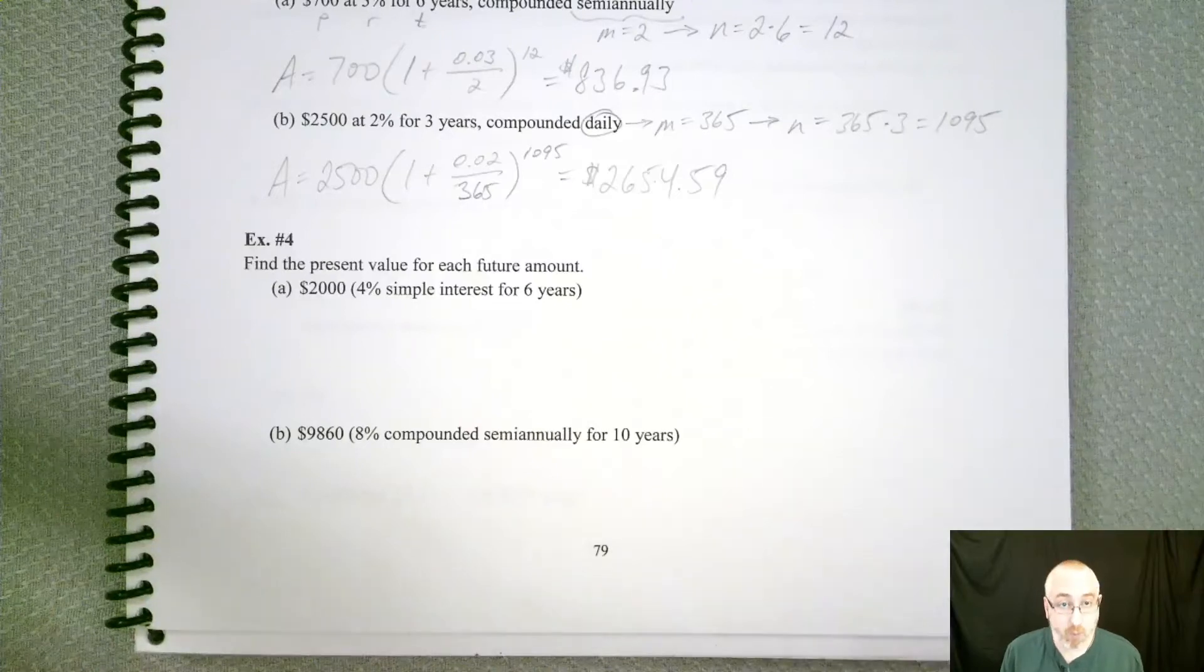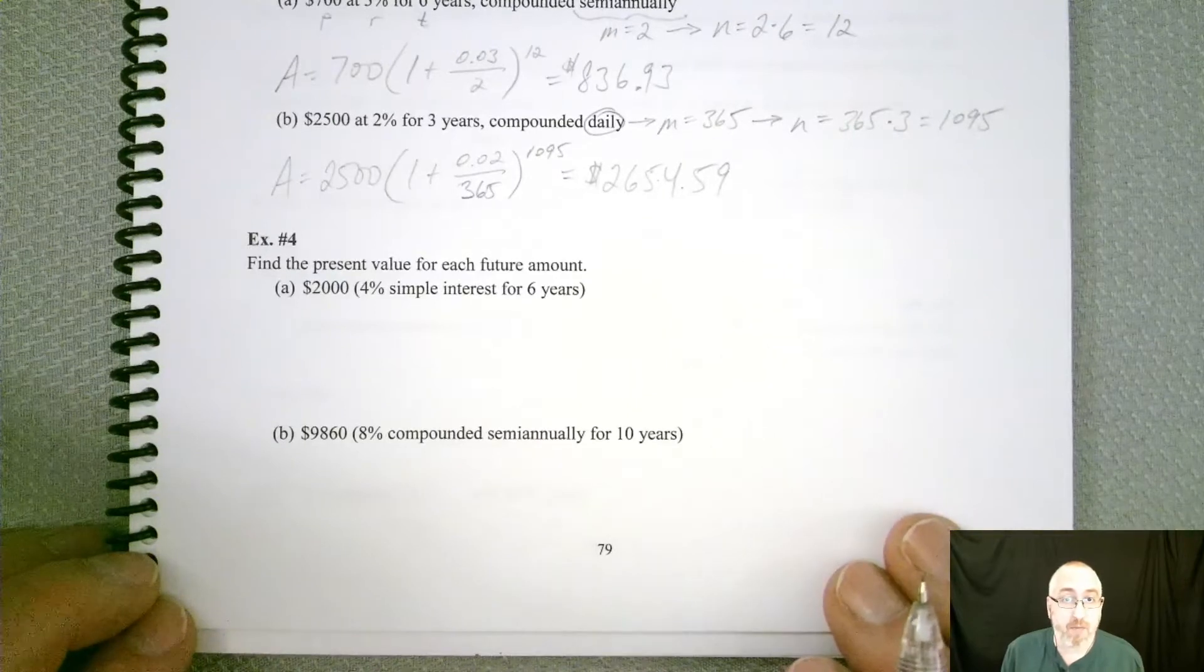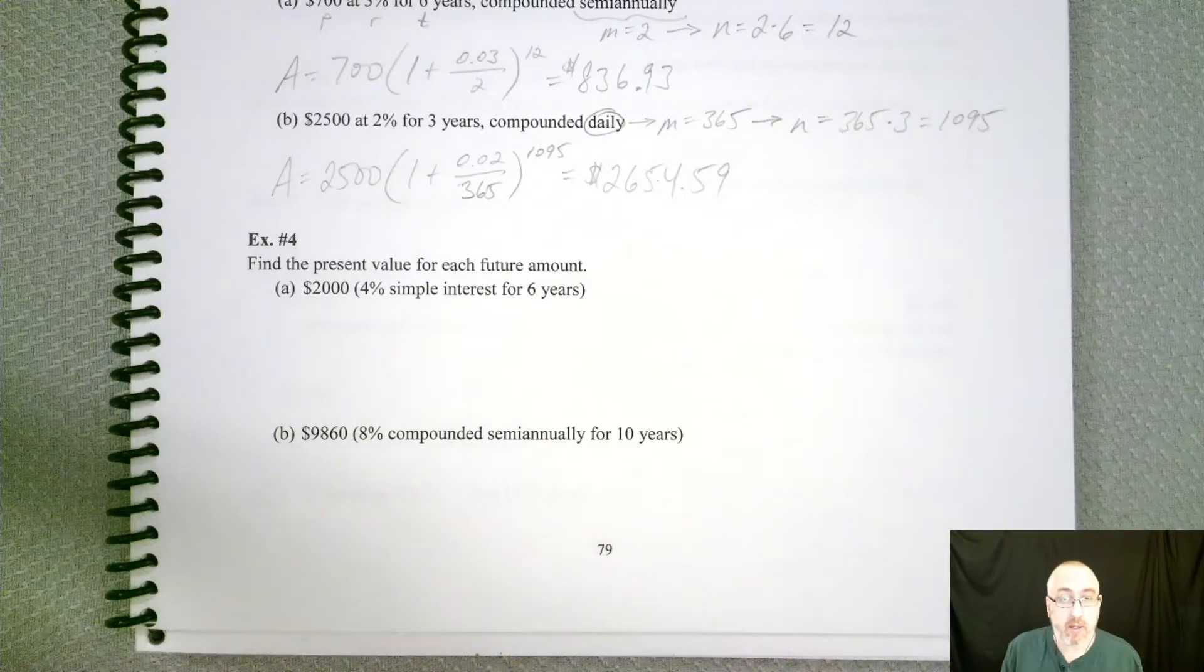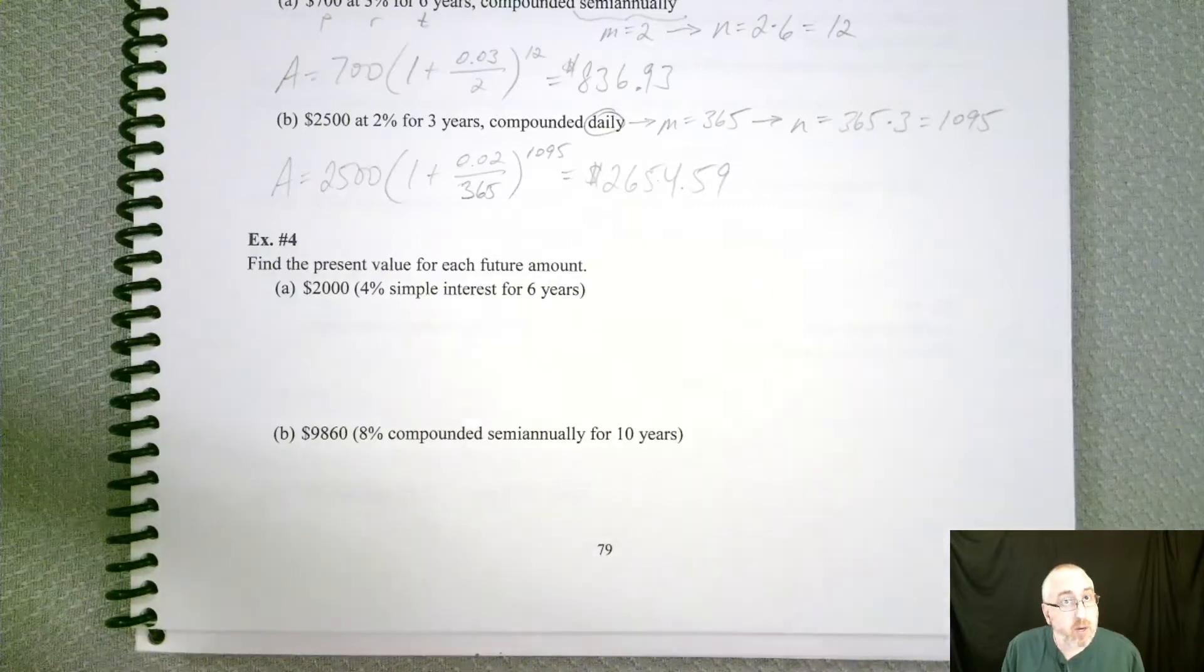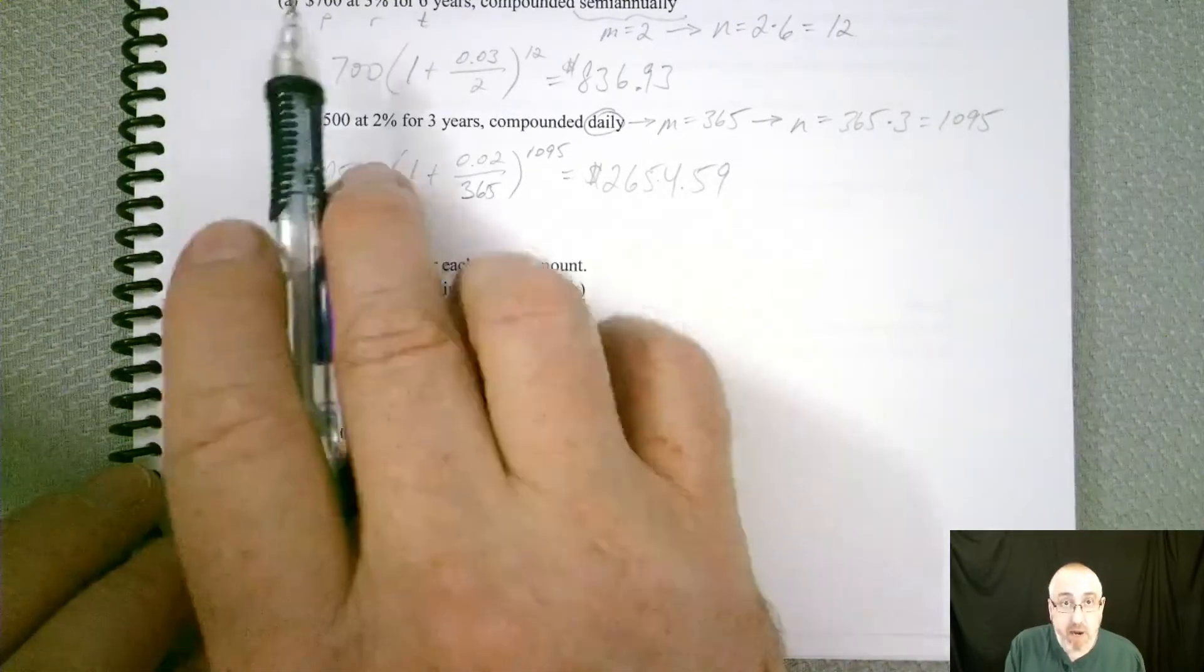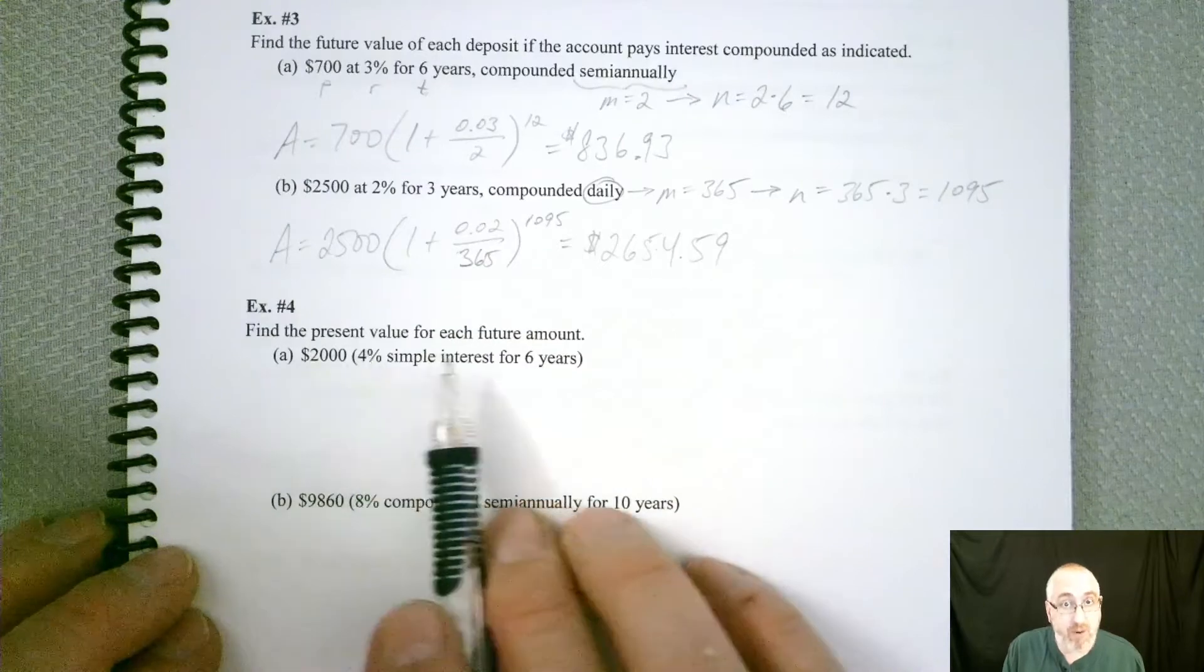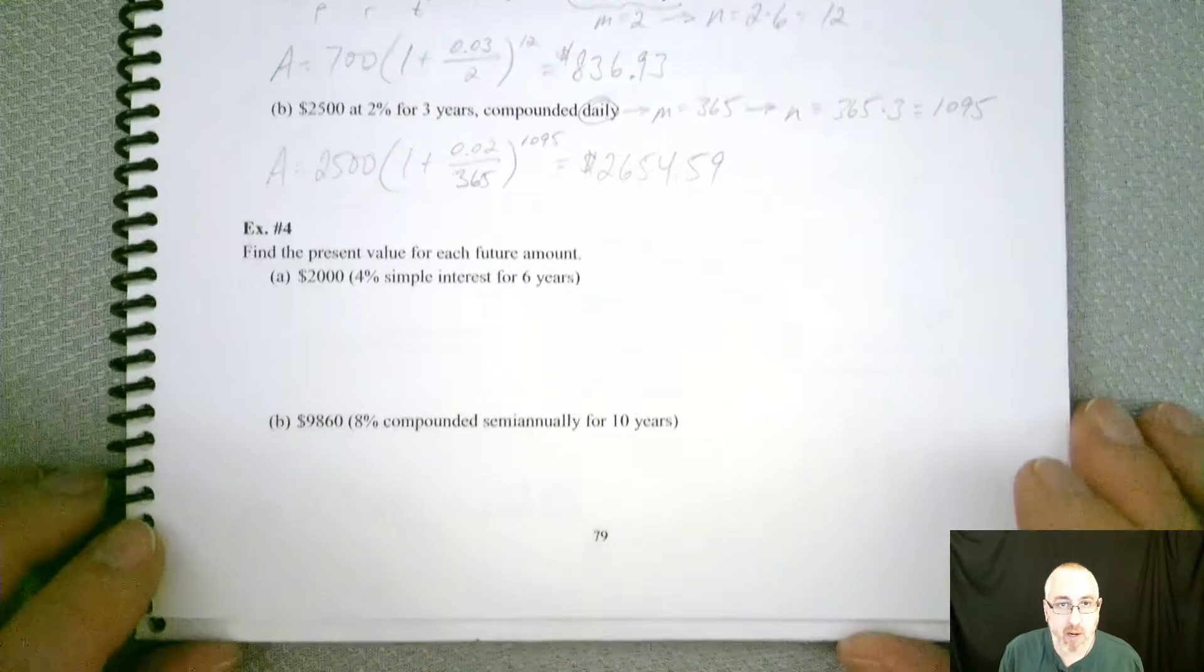All right, welcome back for the next problem. We're going to be looking at example 4 now, which is still using our future value and present value and all those different terms. But now the question is going to be looking for something a little different. So in the previous problems, remember we were looking for a future value. Now the question wants you to find the present value for each future amount. So there's a slight twist to how we're going to tackle this problem.